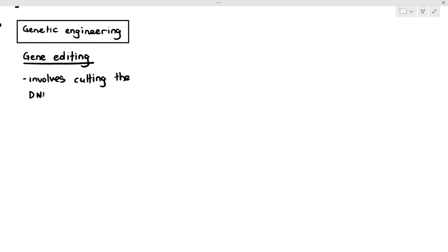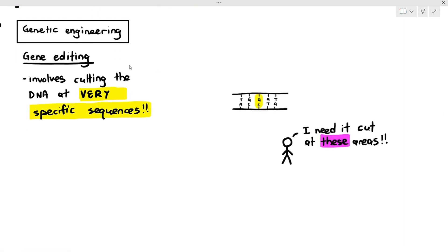So, gene editing involves cutting the DNA at very specific sequences. For example, if I have this base sequence over here, I may want to cut the sequence at that highlighted region. I need to cut that particular area. Now, you might be thinking, oh, this is very simple. If we want to cut the DNA by severing the phosphodiester bonds, we can use the restriction enzymes.